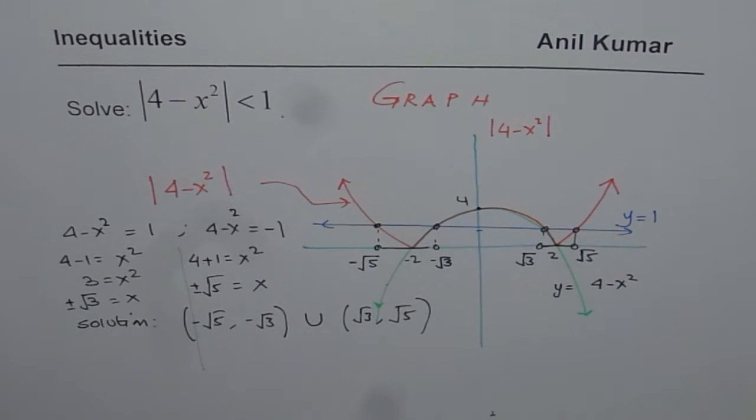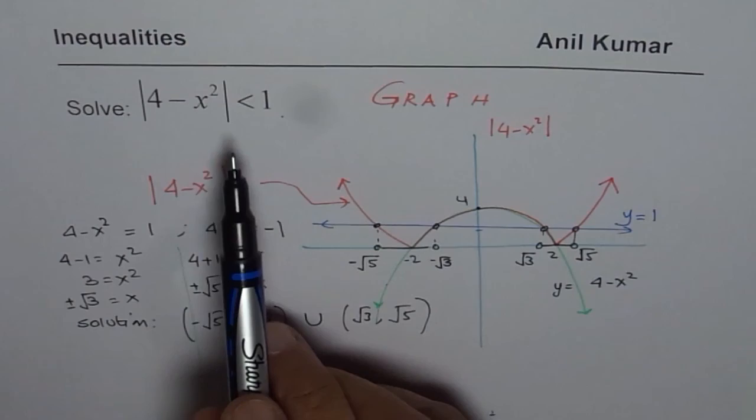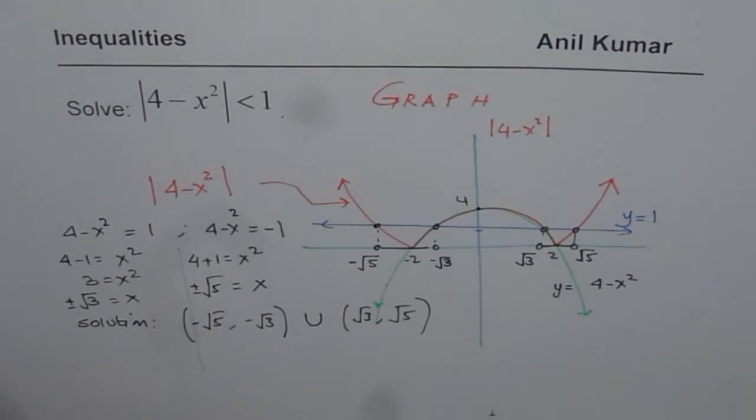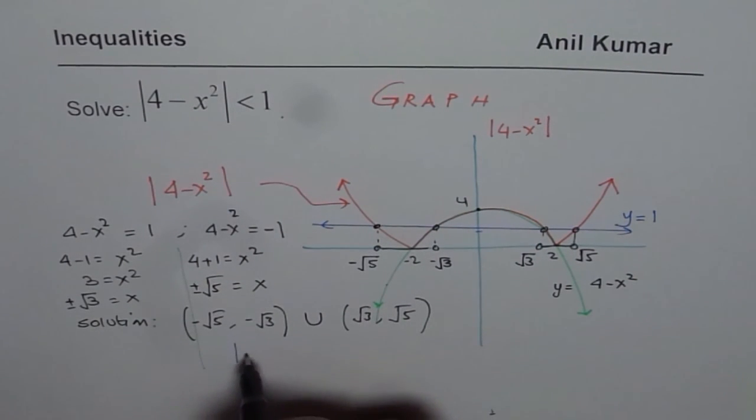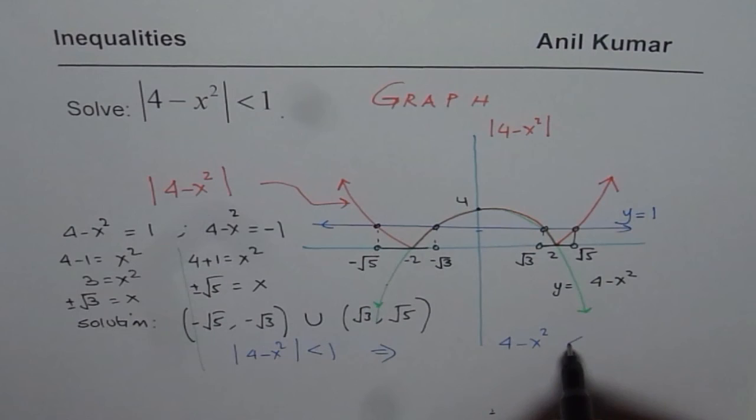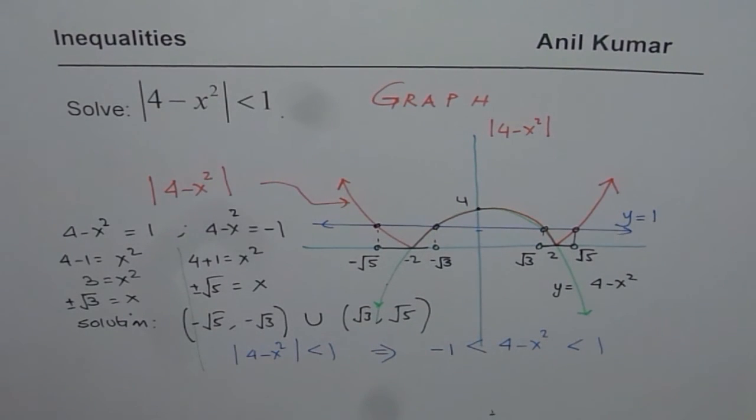Now I like you to solve the same inequality using other methods. I have given you solutions with other methods in different videos. I am providing you a link for that. So what we can do is we can do 4 minus x square is less than 1 absolute value. It implies that 4 minus x square is less than 1 and is greater than minus 1. So what you need to do is solve this inequality, which is a double inequality for you. So we have 4 minus x square is greater than minus 1 and is less than 1. Algebraically, you can solve this and find the solution.